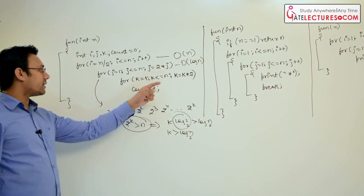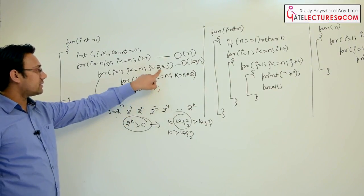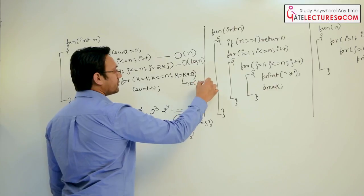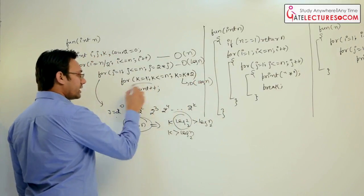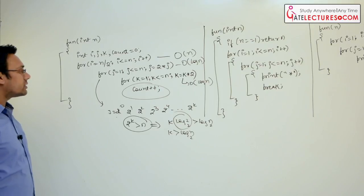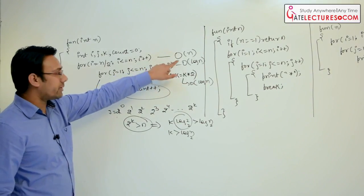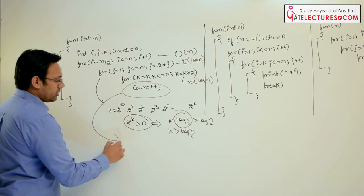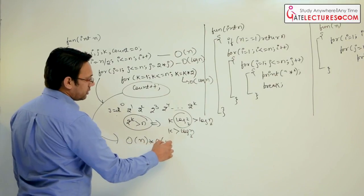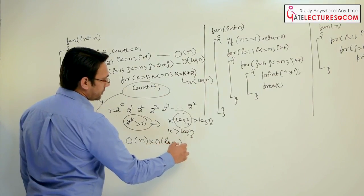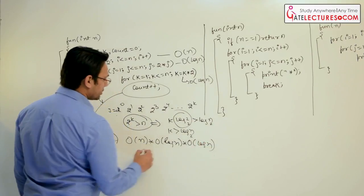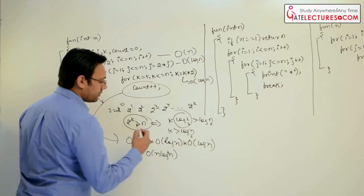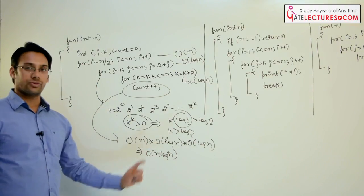The third case is exactly the same as the second case, so it also runs O(log n) times. Therefore the count statement is executed O(n) × O(log n) × O(log n), which equals O(n log² n).